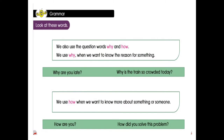We also use the question words 'why' and 'how.' We use 'why' when we want to know the reason for something — for example, 'Why are you late?' or 'Why is the train so crowded today?' We use 'how' when we want to know more about something or someone — for example, 'How are you?' or 'How did you solve this problem?'